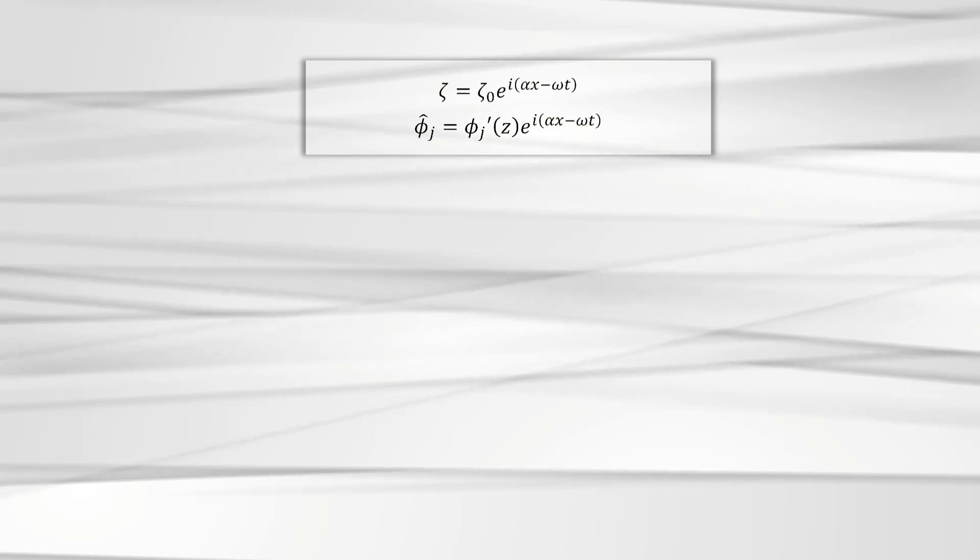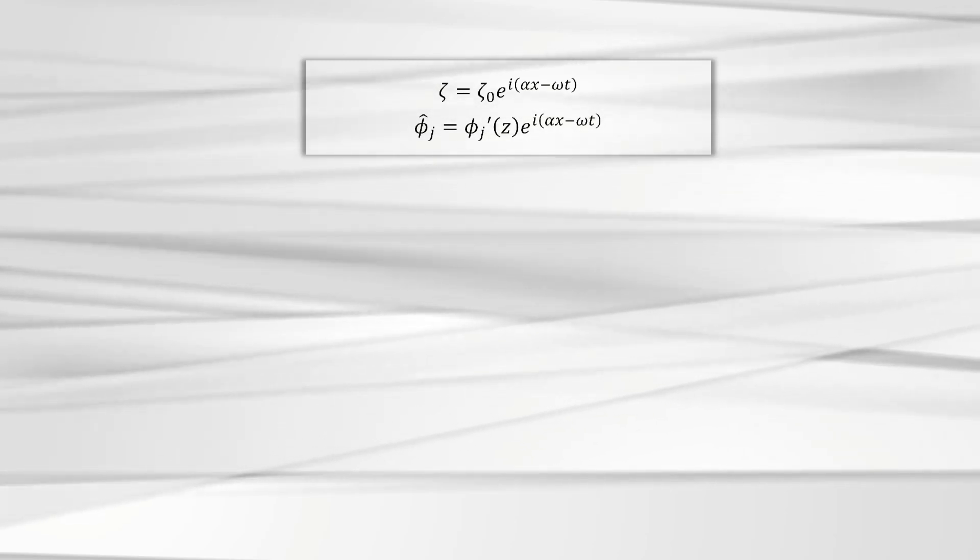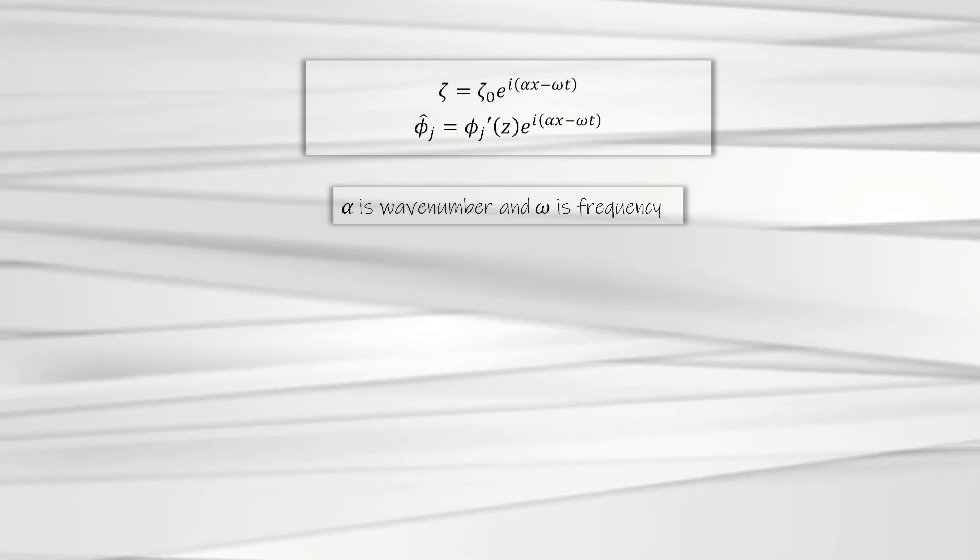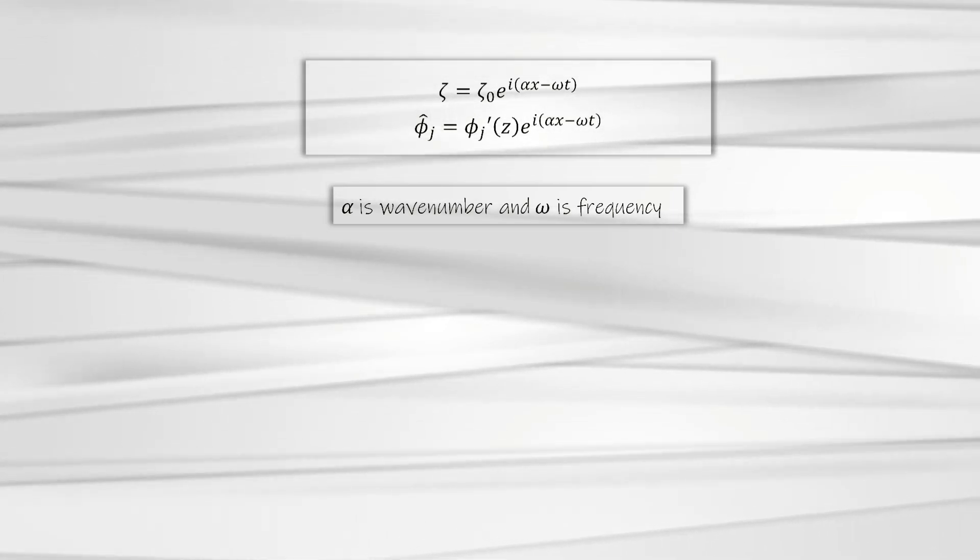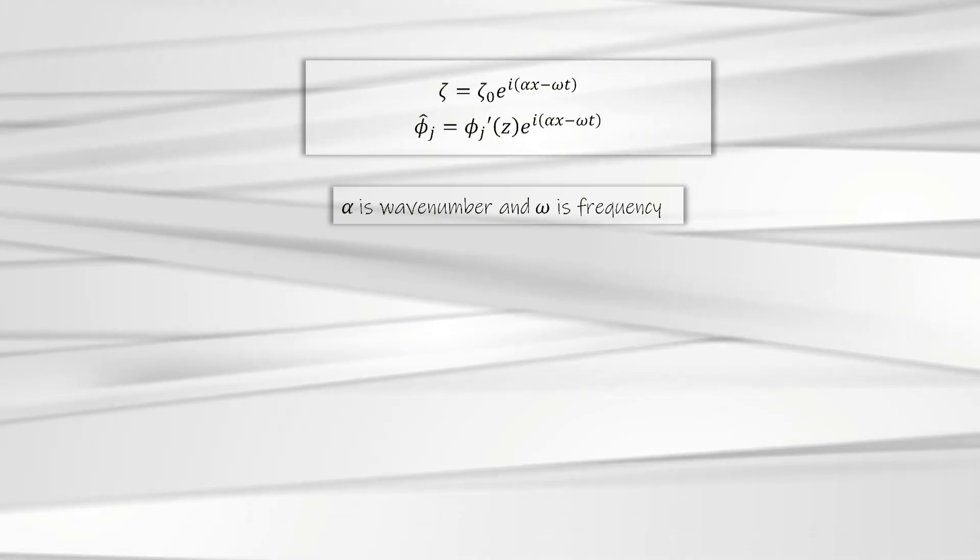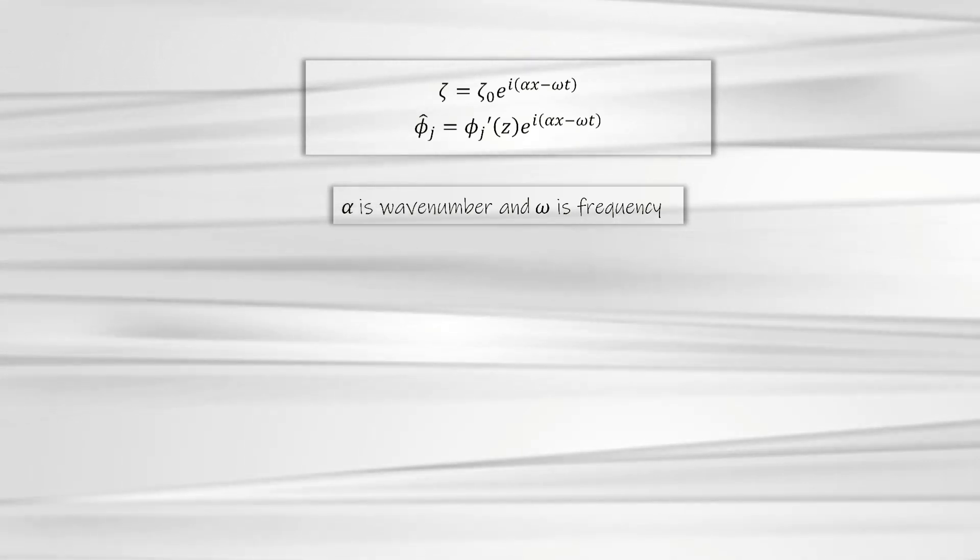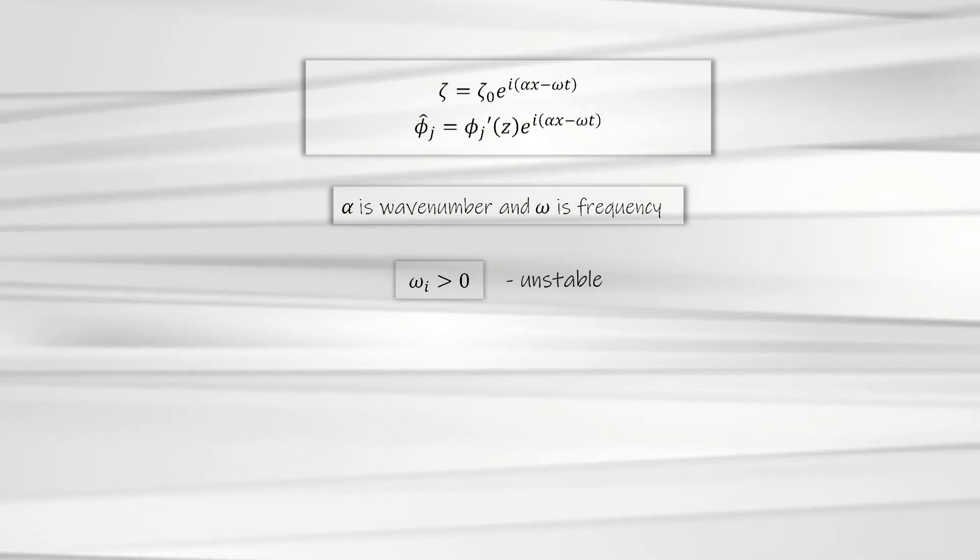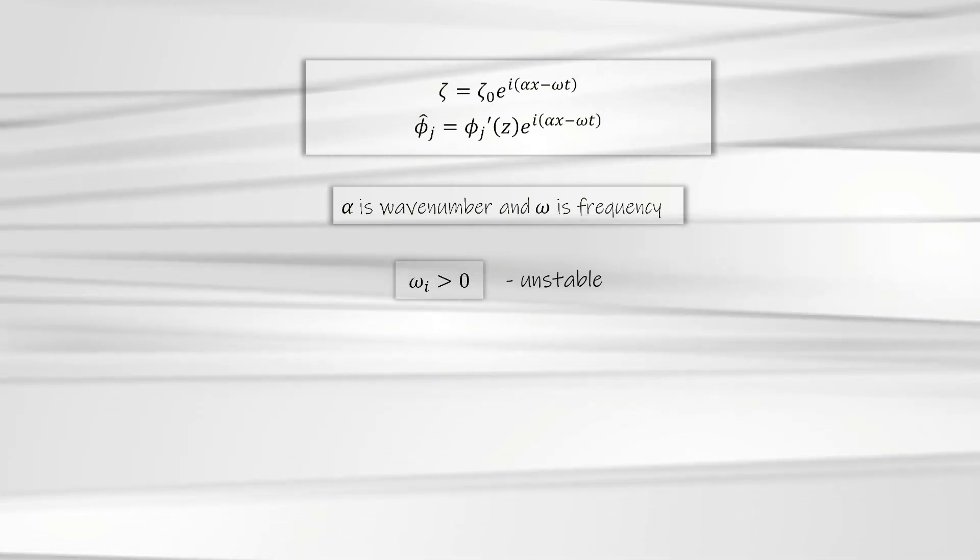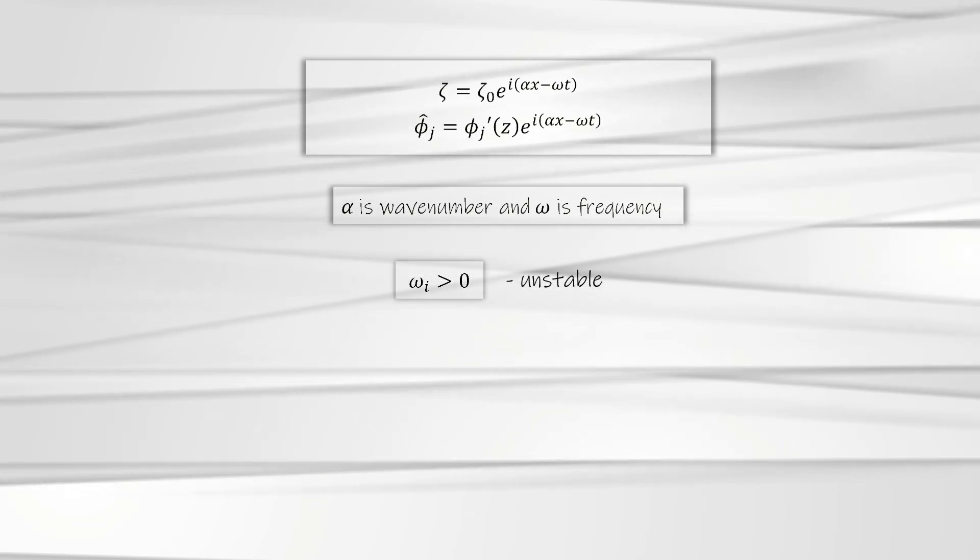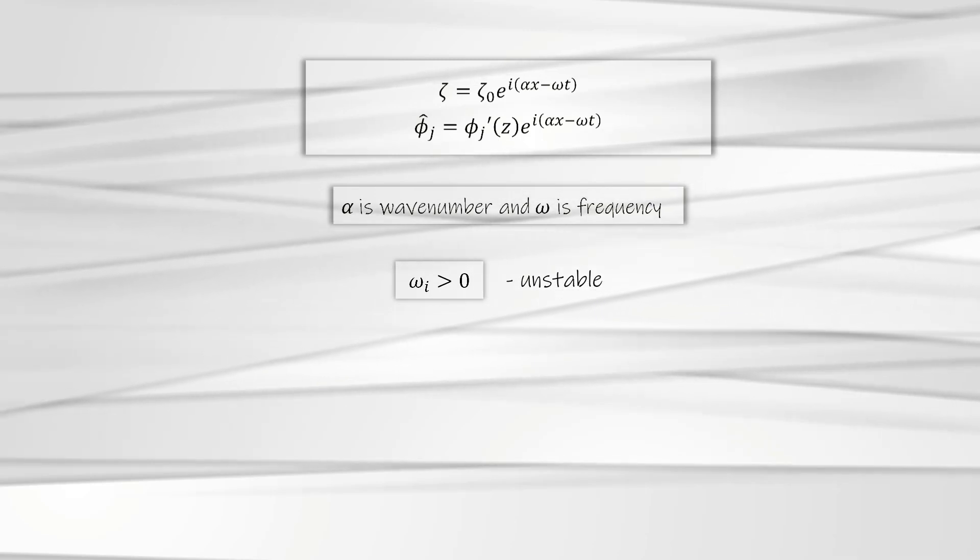Let us assume a simple two-dimensional disturbance as shown here. Alpha is the real number and represents the wave number of the wave. Omega is a complex number and represents the frequency of the perturbation. The disturbance will be amplified and make the fluid interface unstable if the imaginary part of omega is positive, i.e. greater than zero.